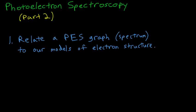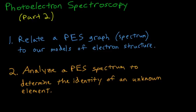Today you should be able to do two things by the time this video is over. You should be able to relate a PES, a photoelectron spectroscopy graph or spectrum, to our models of electron structure. Those models would be Bohr diagrams or the electron configurations. The second thing you should be able to do is to analyze a spectrum to determine the identity of an unknown element.